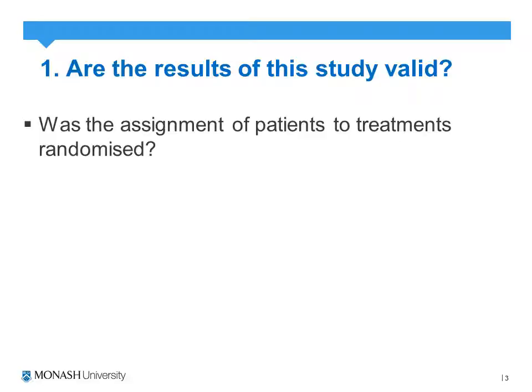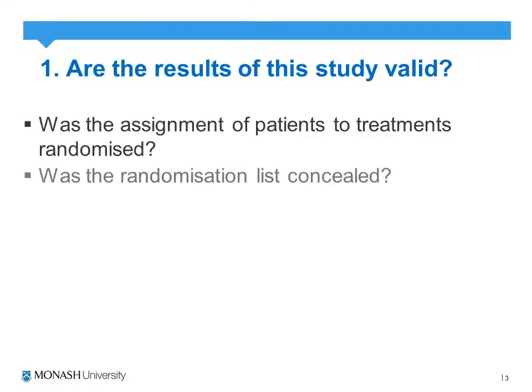The first question we'll concentrate on is: was the assignment of patients to treatments randomised? Hopefully if it is a randomised control trial we can identify that it was randomised, but we want to be a little clearer than that and seek out what type of randomisation process was actually implemented — whether it was a simplified randomised approach and whether there was any allocation to the randomisation as well.